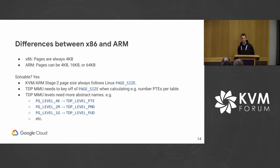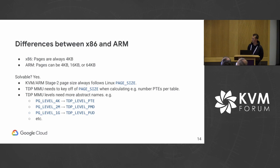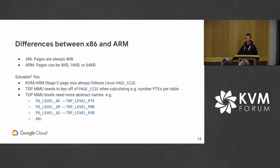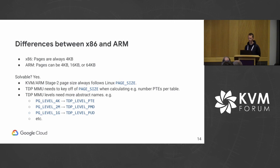Next, on x86 pages are always 4 kilobytes, but on ARM pages can be 4 kilobytes, 16 kilobytes, or 64 kilobytes. This is solvable: KVM ARM stage 2 page sizes always follow the host page size, so the TDP MMU, instead of assuming page tables are 4 kilobytes, would need to key everything off of the page size — for example, when calculating how many PTEs there are per table. The TDP MMU today uses very 4K-focused page-level names like the 4K level, the 2 meg level, and the 1 gig level, so we need to abstract those out to more architecture-neutral names.